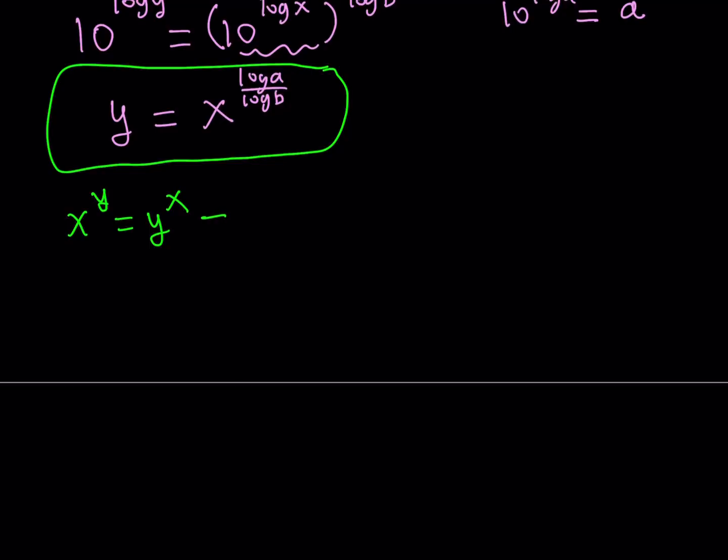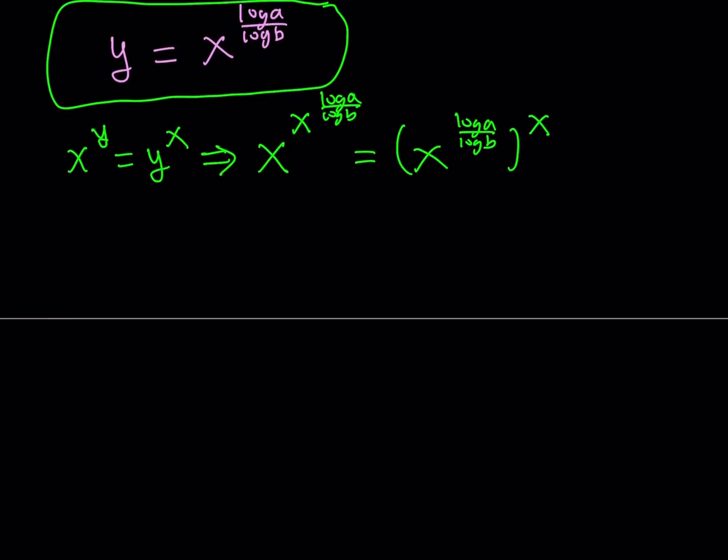Let's go ahead and substitute what we found here. x to the power y will be replaced with x to the power log a over log b. And that is equal to x to the power log a over log b to the power x. Here, exponents will be multiplied. Let's go ahead and write it down. x to the power x to the power log a over log b equals. And when you multiply the exponents here, it's going to look like this. Log a over log b times x.